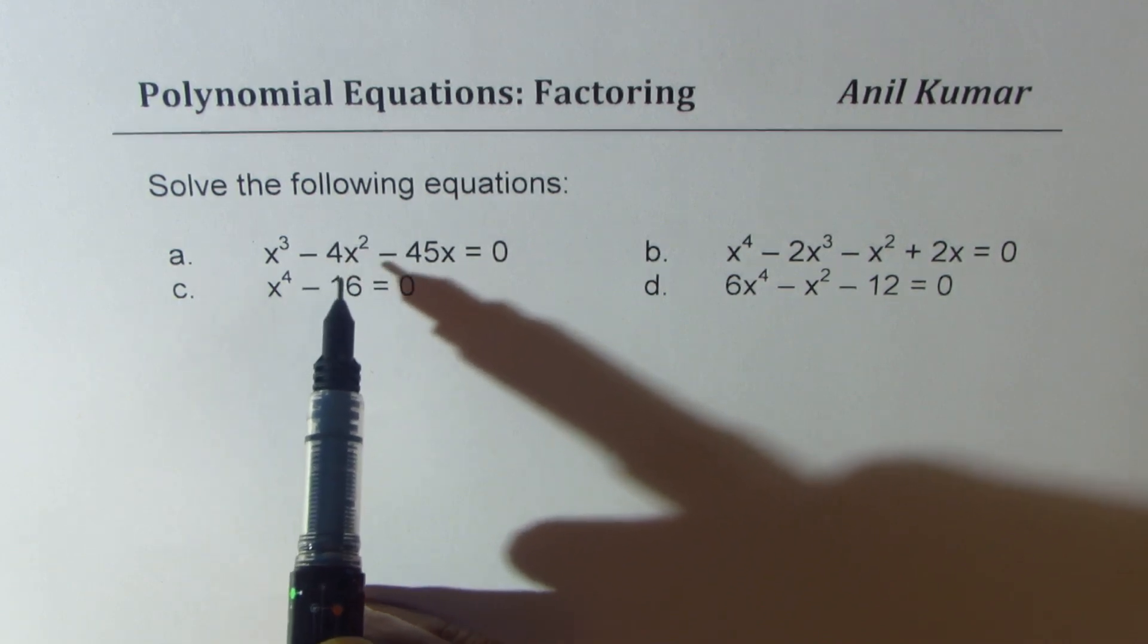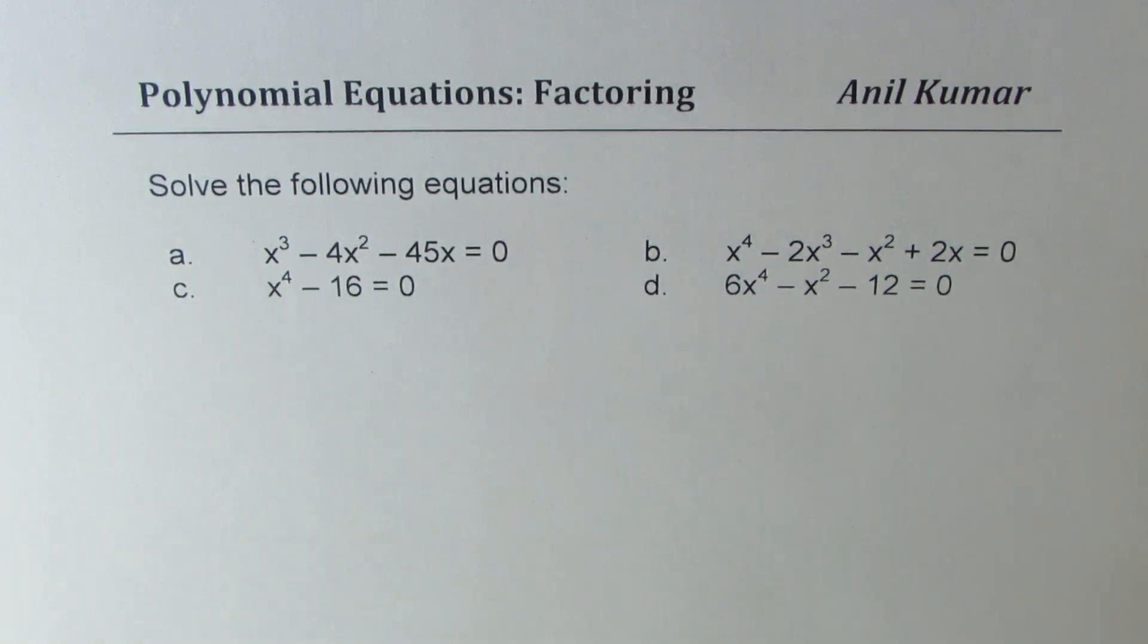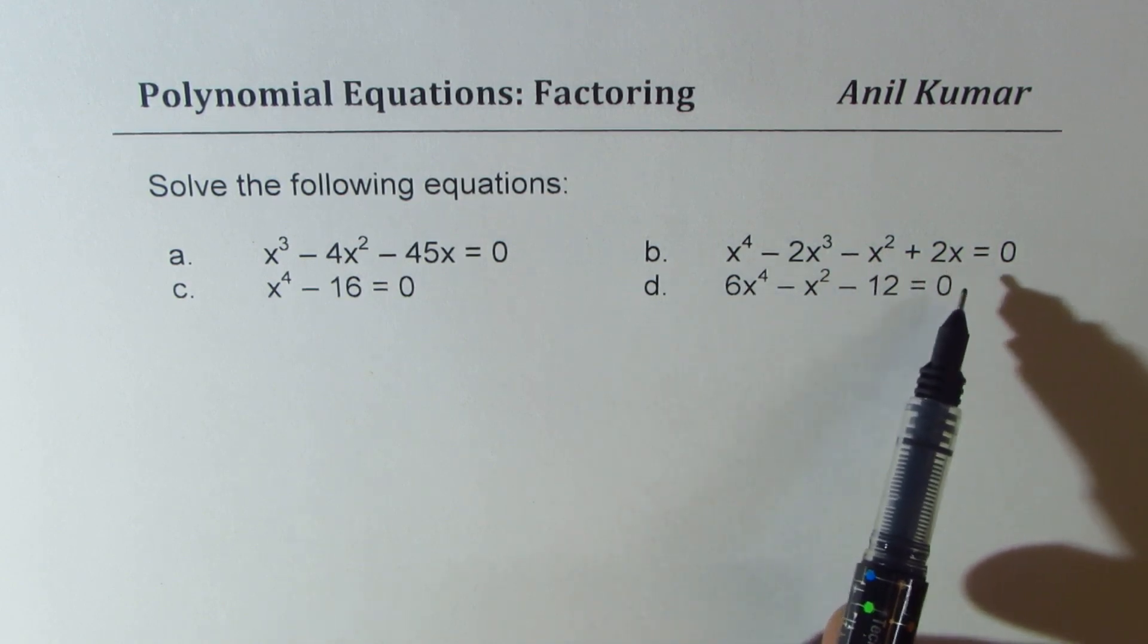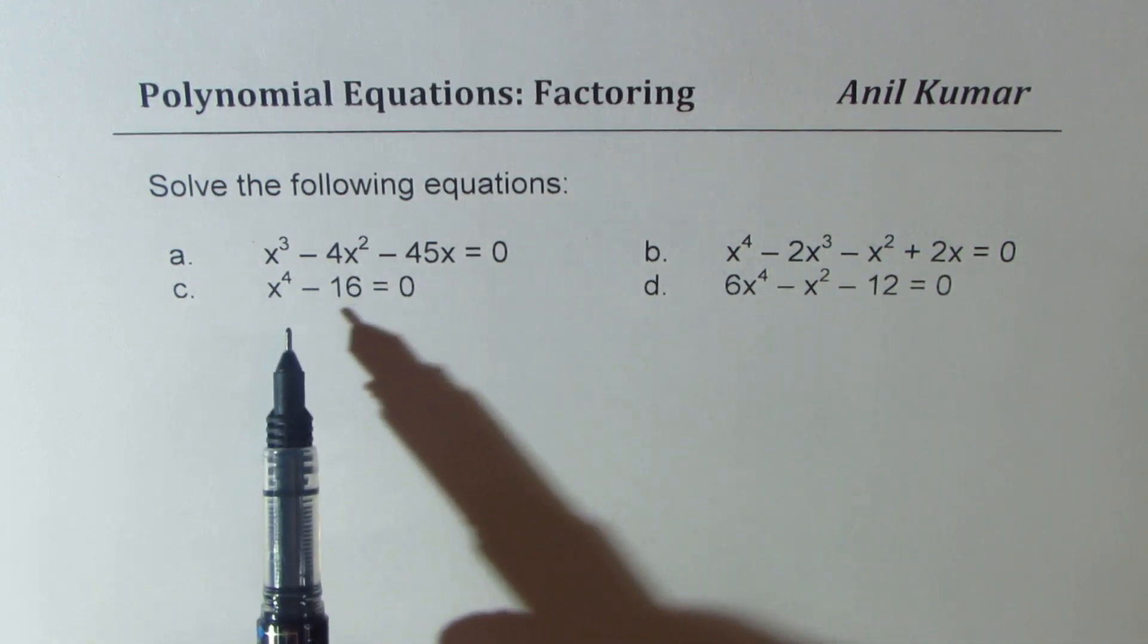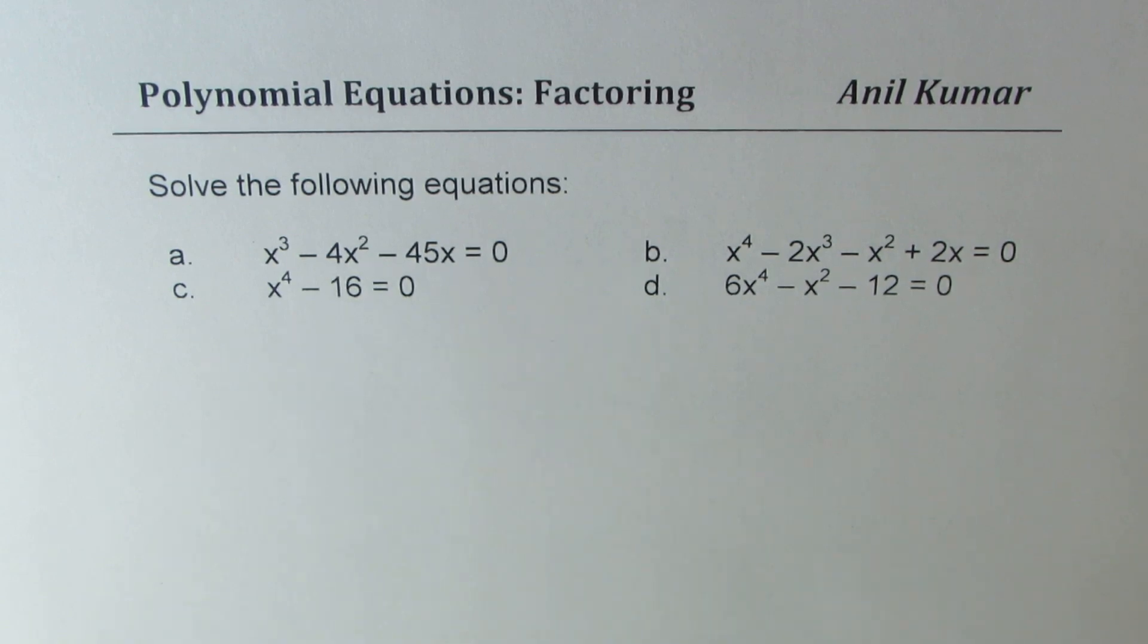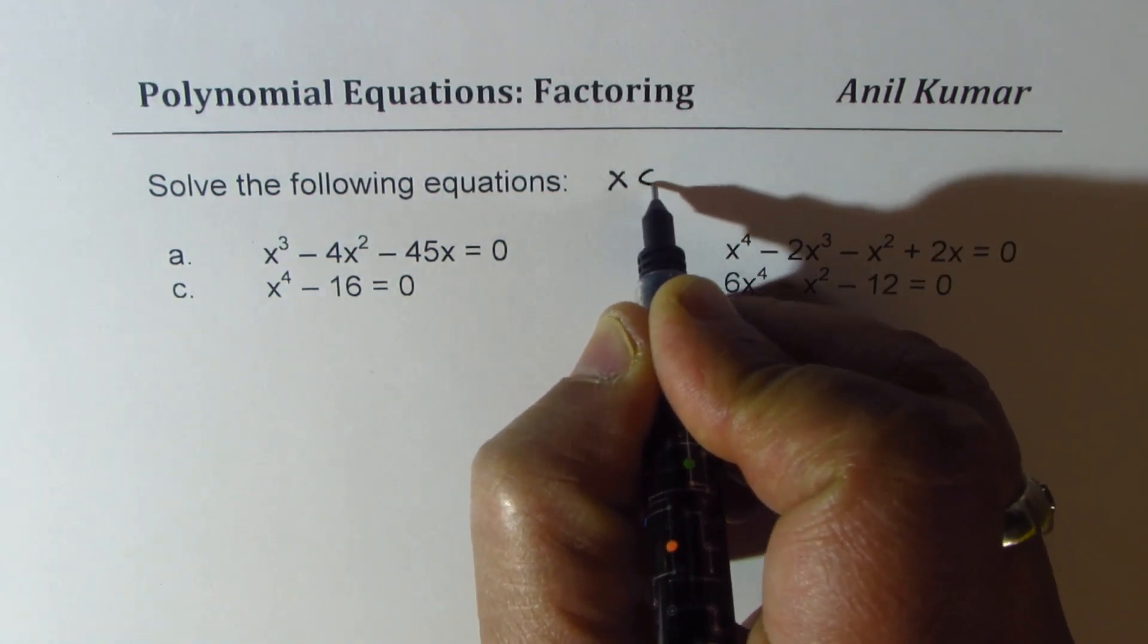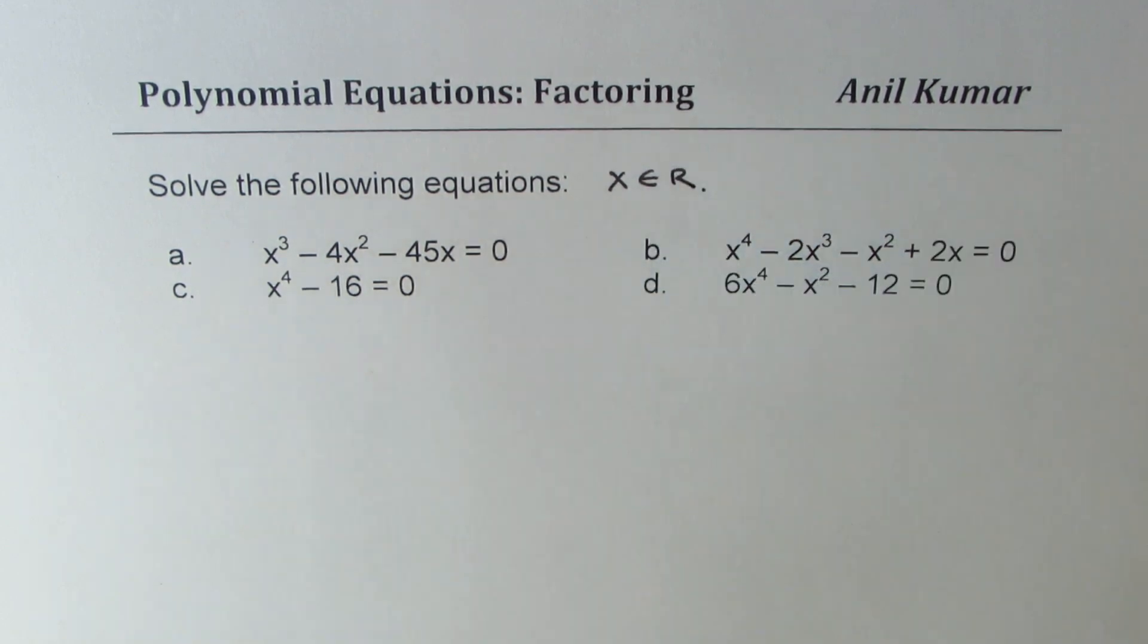x cubed minus 4x squared minus 45x equals 0, x to the power of 4 minus 2x cubed minus x squared plus 2x equals 0, x to the power of 4 minus 16 equals 0, and 6x to the power of 4 minus x squared minus 12 equal to 0. We'll solve in the domain of real numbers.